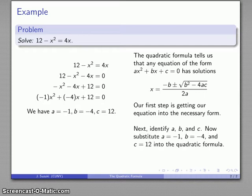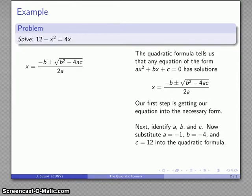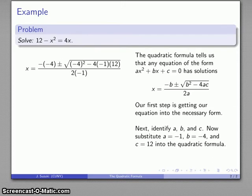I can substitute those into the quadratic formula to get my solutions. I have my quadratic formula: x = (-b ± √(b² - 4ac)) / 2a. I'll substitute those in: b is -4 twice, a is -1 twice, and c just appears in this one location.